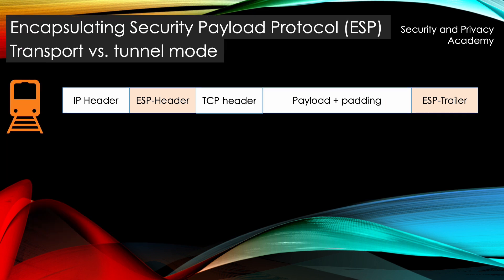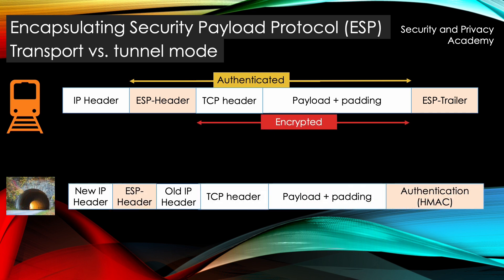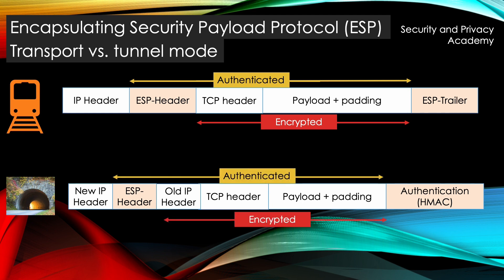However, both issues can be solved by using ESP in tunnel mode rather than transport mode. The ESP header is now in front of the old IP header, which is both authenticated and encrypted, just as the payload. A new IP header is generated and the original datagram is encapsulated. Upon arrival at the destination, the datagram can be decrypted and integrity can be checked. This is also how VPNs operate and how your identity remains concealed while surfing using a VPN.